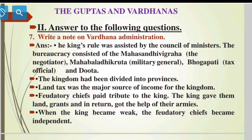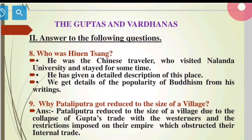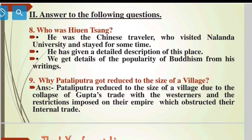Who was Huen Tsang? He was the Chinese traveller who visited Nalanda University and stayed for some time. He has given a detailed description of this place, and we get detailed information on the popularity of Buddhism from his writings. Patliputra was reduced to the size of a village due to the collapse of Gupta trade with the Westerners and the restrictions imposed on their empire which obstructed internal trade.